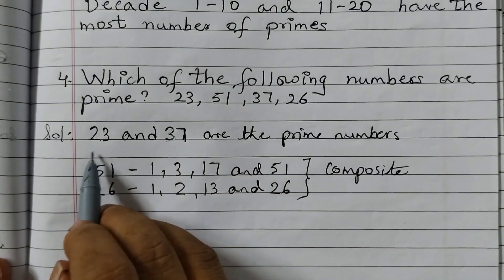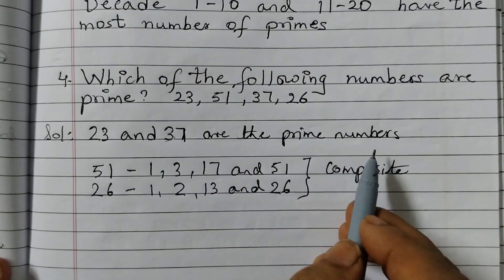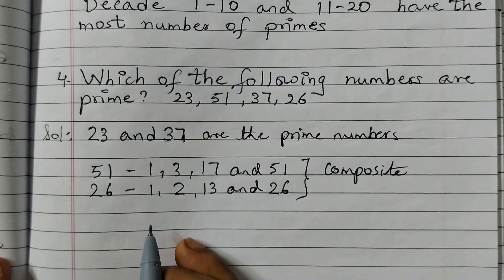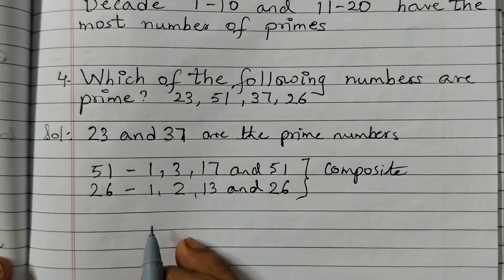So you just need to write this part: 23 and 37 are the prime numbers. This is just for explanation purposes. Hope this is clear to you. See you all in the next video. Thank you.